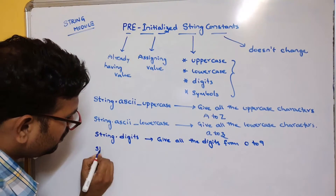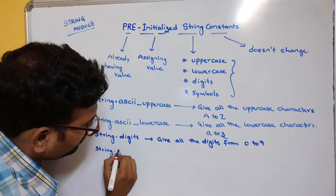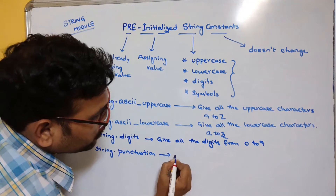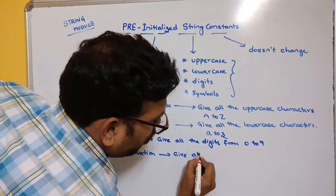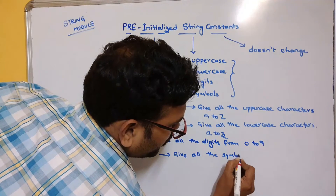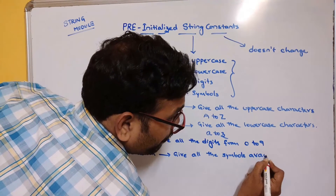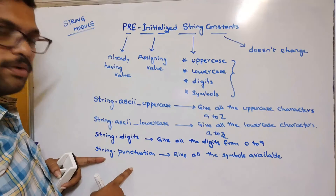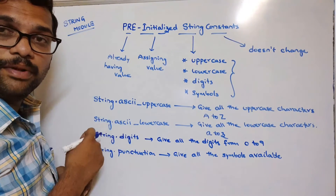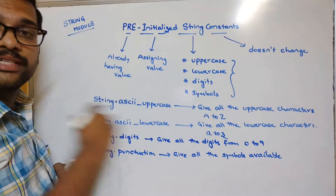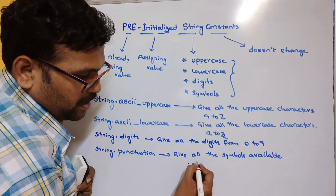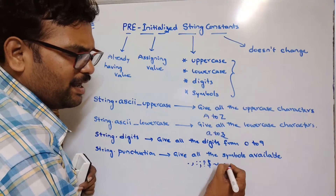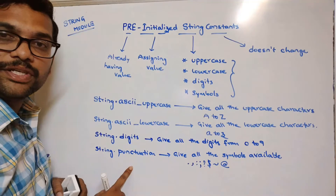The next one is string.punctuation. This will give all the symbols available. Whatever symbols are available — full stop, comma, colon, semicolon, question mark, dollar, tilde, at-sign, etc. — everything comes under string.punctuation.